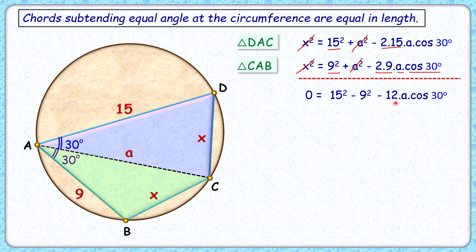Simplifying, we get 12a·cos 30° = 15² - 9² = 144. The value of a will be 12/(cos 30°). Putting cos 30° value as √3/2 and simplifying, we get a = 8√3 cm.